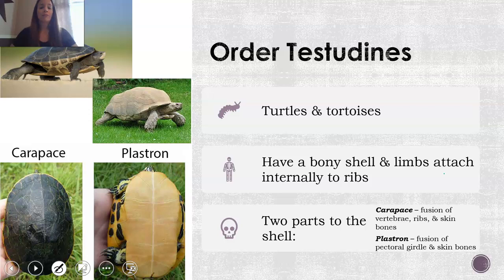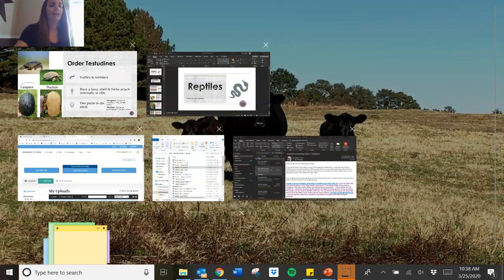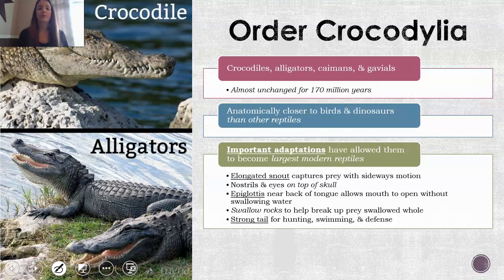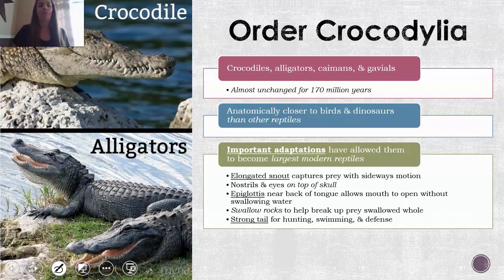When we talk about diversity, there are four orders. First is Order Testudines — these are turtles and tortoises, known for their shells; the carapace is the top and the plastron is the bottom. Order Crocodilia includes crocodiles, alligators, caimans, and gavials — these have been unchanged for millions of years and are anatomically closer to birds and dinosaurs than any other reptiles. They have several important adaptations: their snout, an epiglottis to block water from getting down their throats when they eat, they swallow rocks to help break up prey, and they have a really strong tail.